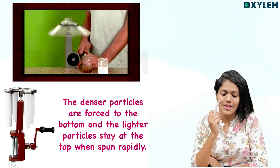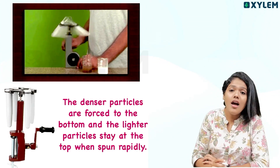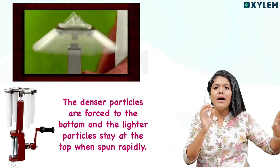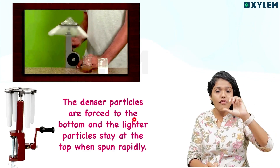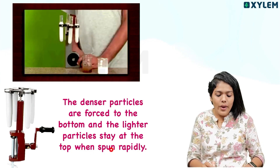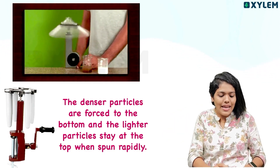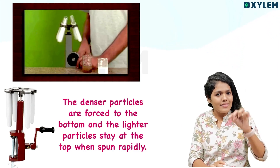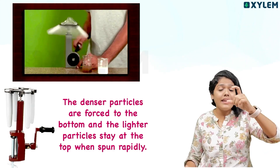In centrifugation, denser particles are forced to the bottom of the test tube, and the lighter particles stay at the top when the mixture is spun rapidly. This separation is based on the mass difference of the particles.